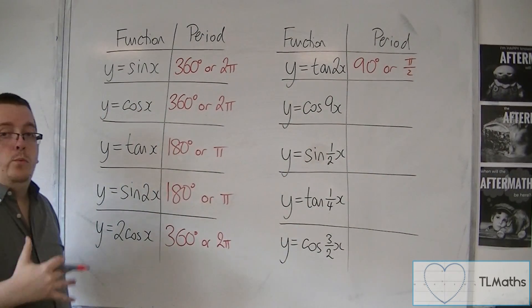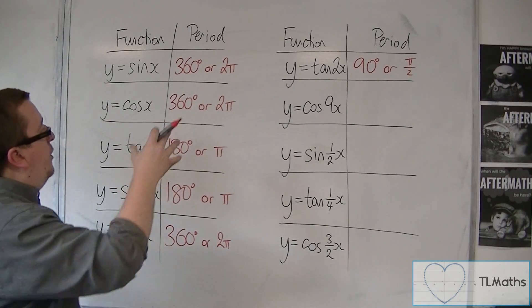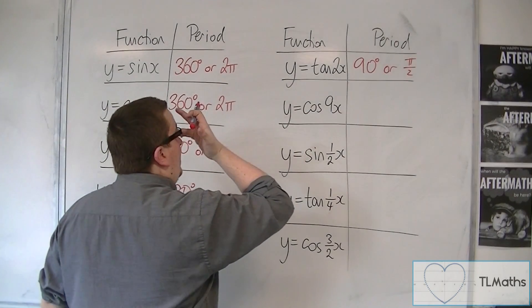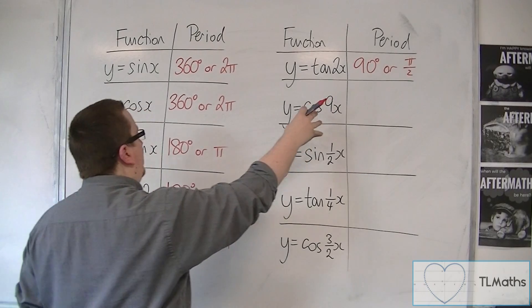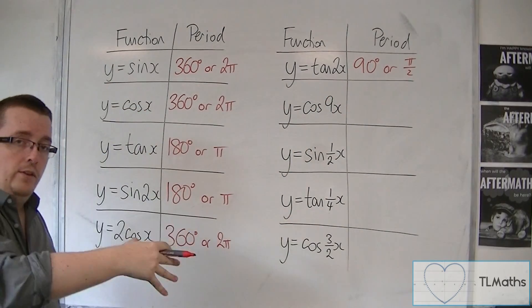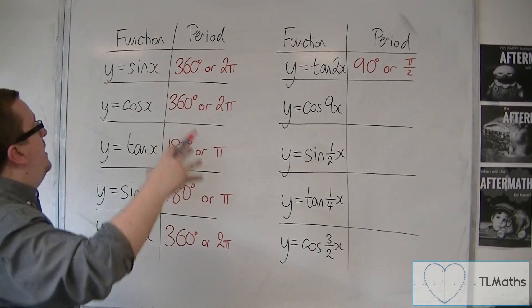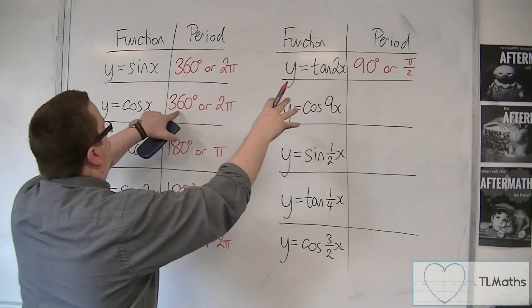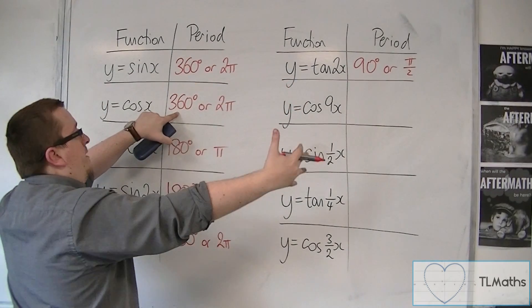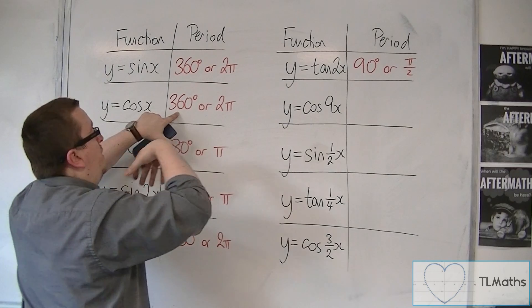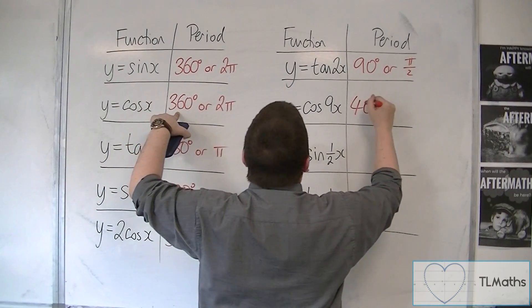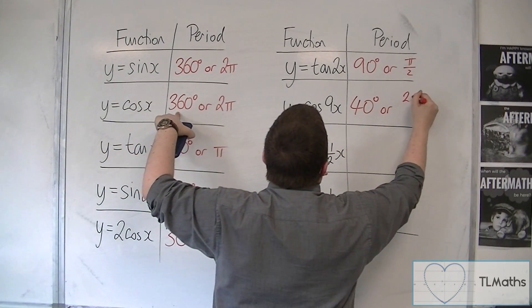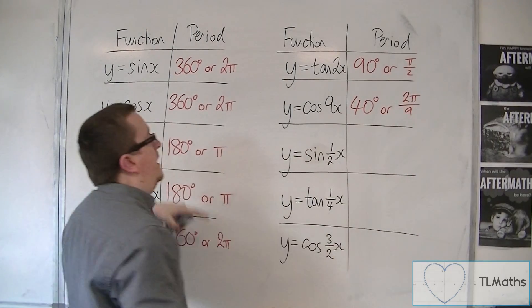And this method works for all of them. So cos of 9x is a stretch parallel to the x-axis factor of 1 ninth. And so we are dividing 360 by 9, which gets us 40 degrees or 2 pi over 9, if you're in radians.